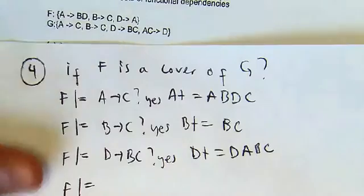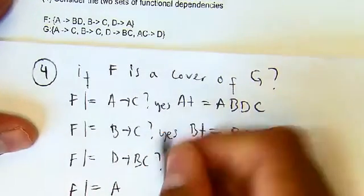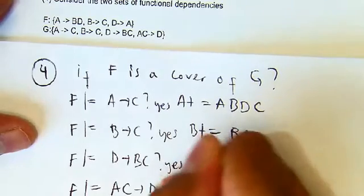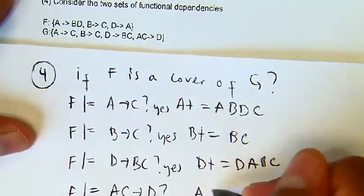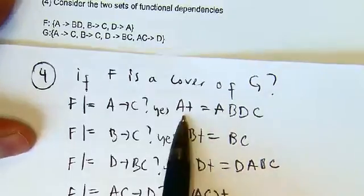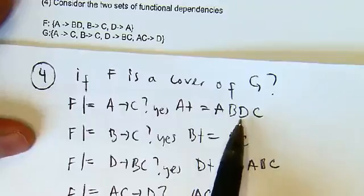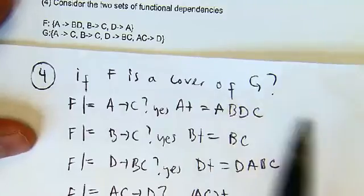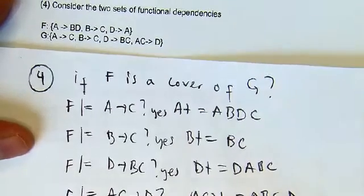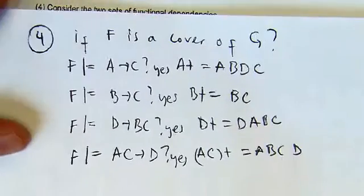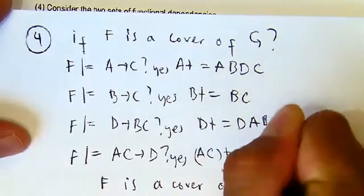Now we check the last functional dependency of G, which is AC→D. We compute AC+ using F. We know that A+ gives us A, B, C, D — all attributes. So AC+ is also A, B, C, D, and D is a subset of that. The answer is yes. So F is a cover of G.